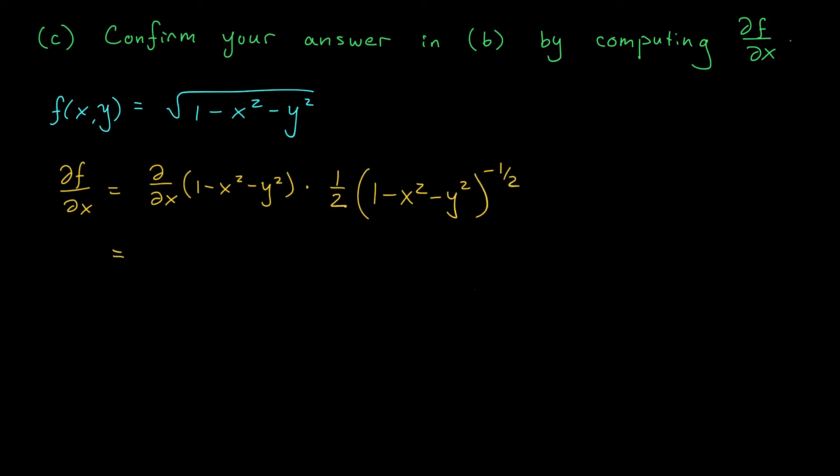I still need to do this partial derivative. I get minus 2x, that's the derivative of the inside, times 1 over 2 root 1 minus x squared minus y squared. If you'd like, you can clean this up by canceling the 2. That leaves you with minus x over the square root of 1 minus x squared minus y squared.